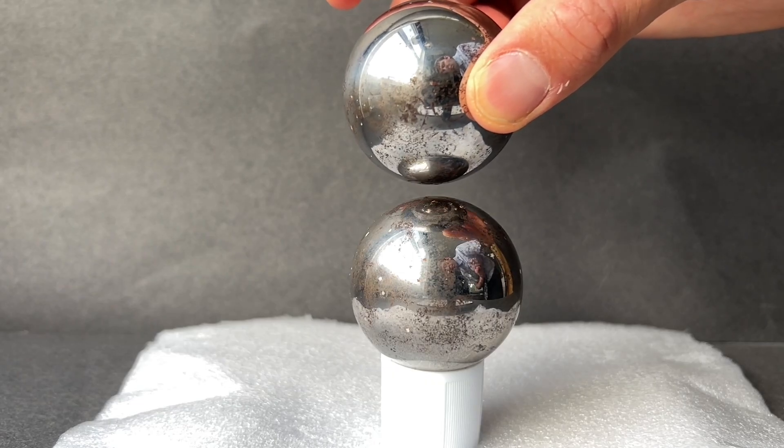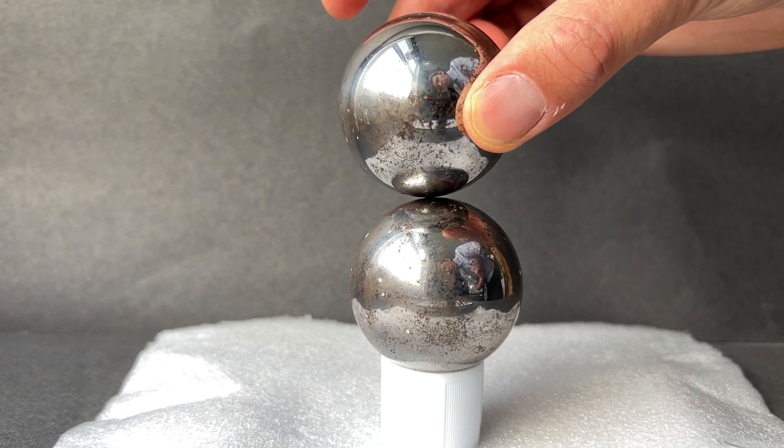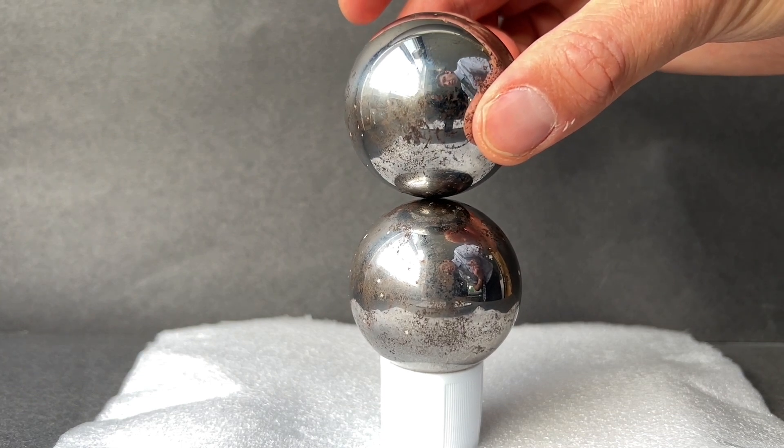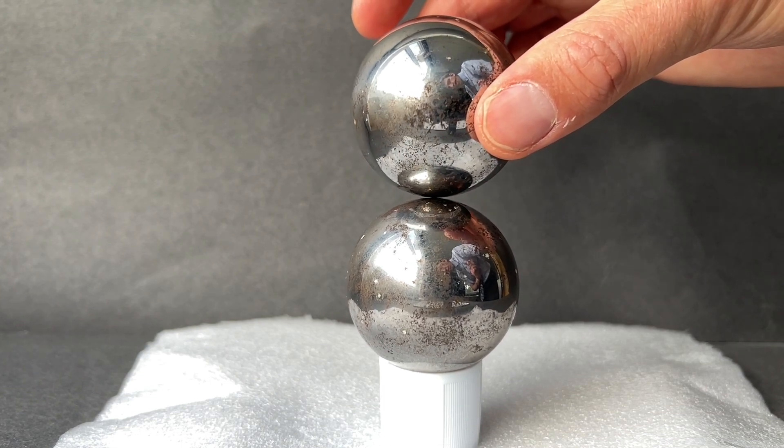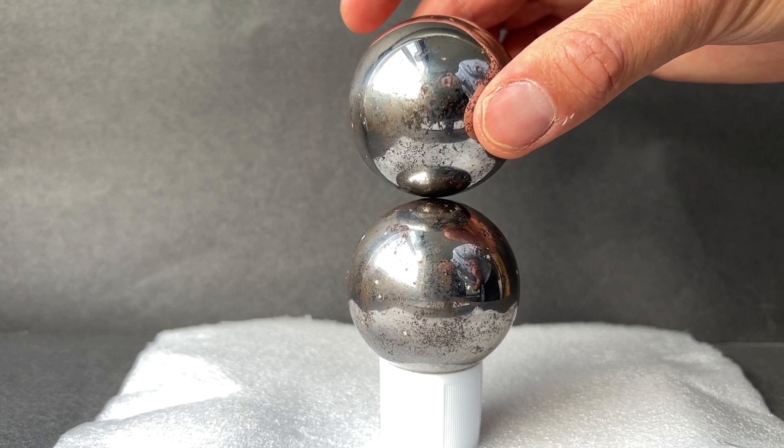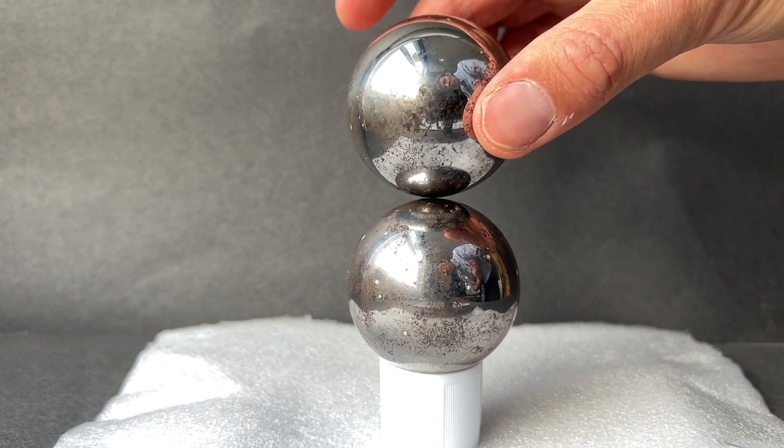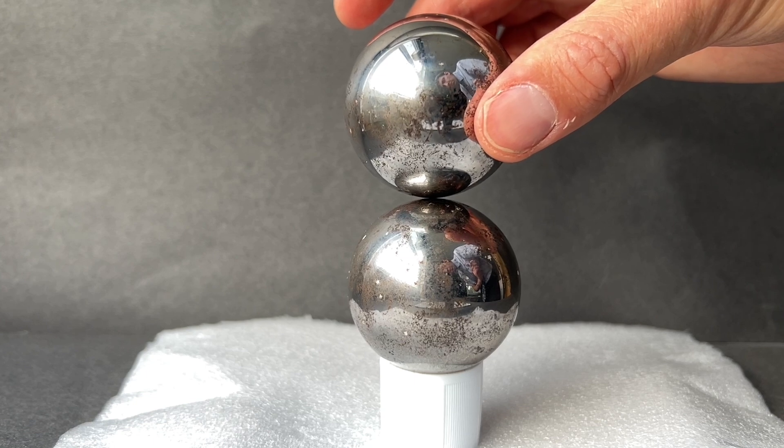But somehow the floating magnet stays in this exact position in unstable equilibrium, which is a bit like trying to balance a ball on top of another ball, which theoretically should be able to balance in the centre, but you're never going to get it quite right.